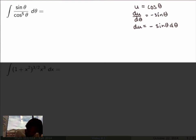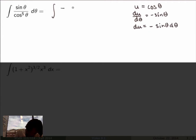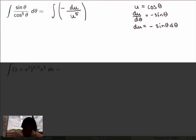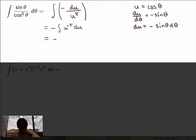So sine theta dθ equals minus du, and I can rewrite the integral as minus du over u to the fifth power — in other words, the integral of u to the minus five du.